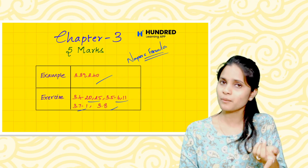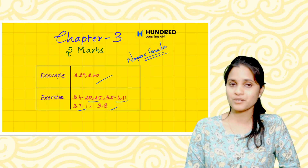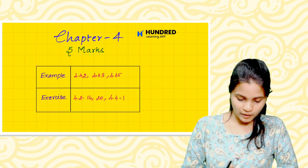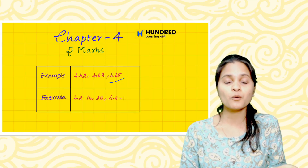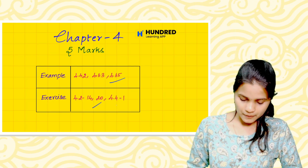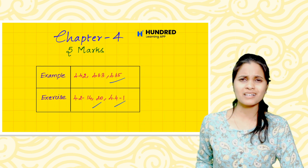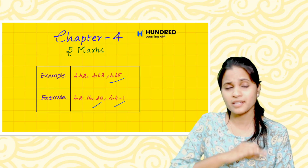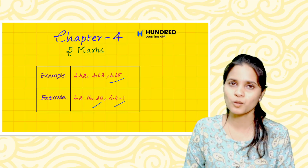These are high priority. In chapter 4: Example 4.42, 4.63, and 4.65 are very important. Exercise 4.2, questions 14 and 21. Next: Exercise 4.4, 1st problem. Review all of these thoroughly — that's very important.